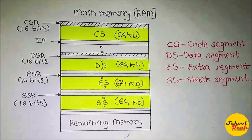Now coming to the Execution Unit, which is the second stage of the pipeline architecture. It contains a control system used to receive instructions from the 6-byte instruction queue and interpret them — a process called decoding, to find the meaning of the instruction. There are two decoding techniques: CISC (Complex Instruction Set Computer) and RISC (Reduced Instruction Set Computer). The 8086 processor uses the CISC approach for decoding instructions.